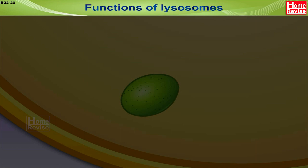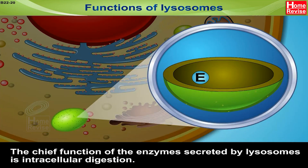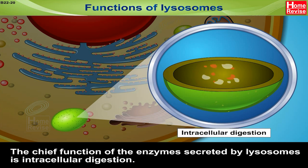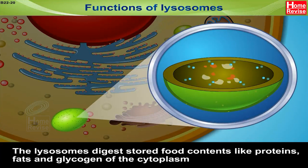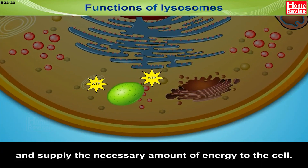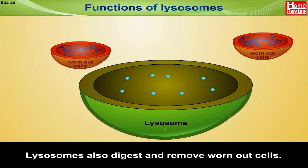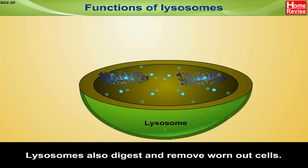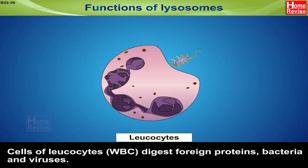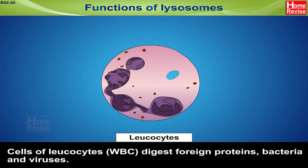Functions of Lysosomes. The chief function of the enzymes secreted by lysosomes is intracellular digestion. The lysosomes digest stored food contents like proteins, fats and glycogen of the cytoplasm and supply the necessary amount of energy to the cell. Lysosomes also digest and remove worn-out cells. Cells of leukocytes — that is WBC — digest foreign proteins, bacteria and viruses.